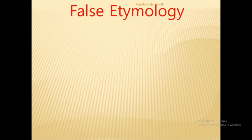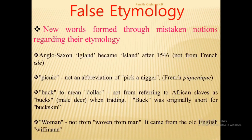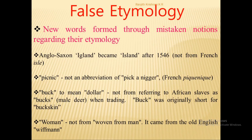The next process is false etymology — new words formed through mistaken notions regarding their origin. For example, many believe the word 'island' came from the French word 'isle,' but it was actually the Anglo-Saxon 'igland' that became 'island' after 1546. Another popular misconception is that 'picnic' is an abbreviation of a racial slur — it is not. 'Buck' meaning dollar is mistakenly thought to derive from various sources, but is actually short for 'buckskin.' And many believe 'woman' means 'woven from man,' but it actually came from the Old English word 'wifman.'